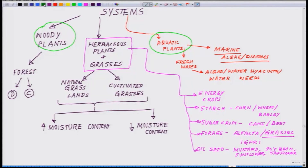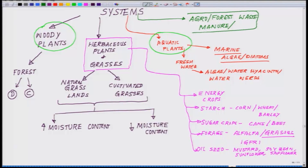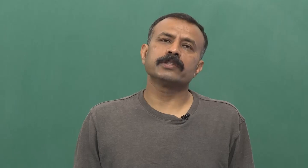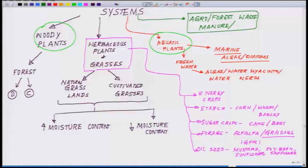There is a fourth category: agro-waste and manures, or forest waste. This includes manure and human excreta, which are also sources that could be utilized for energy production. As most of you know, gobar gas uses cow dung. Similarly, there are different ways by which you can use this kind of waste — including burnt crop residues or crop residues which are left, which instead of burning could be utilized for different kinds of processing for production of energy. So these are the agro and forest waste and manure.